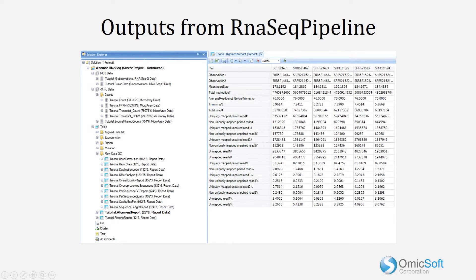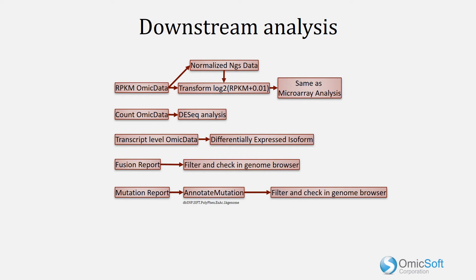After the pipeline is complete, the user will find a large number of data objects in their solutions. In addition to looking directly at these data, they can be used in a number of downstream analyses in Array Studio, such as differential gene expression and differential isoform expression, fusion events, and variations.